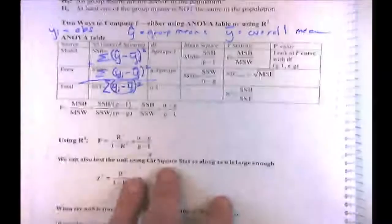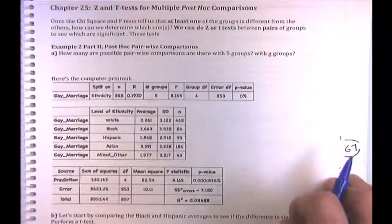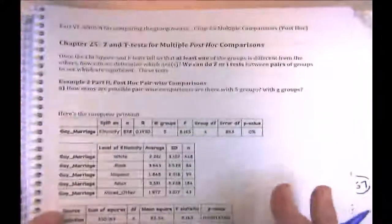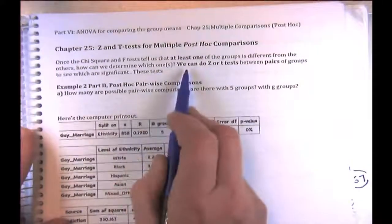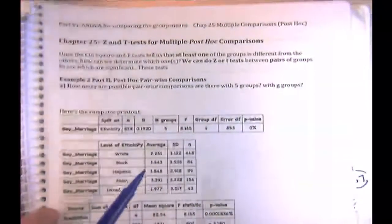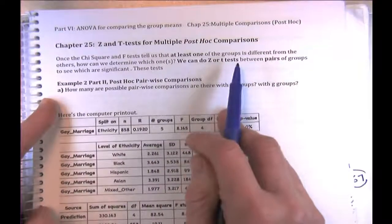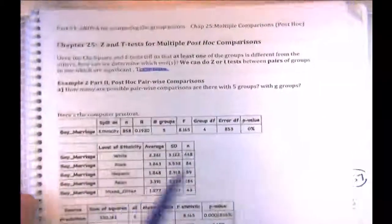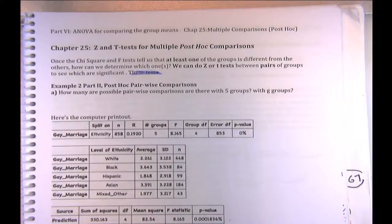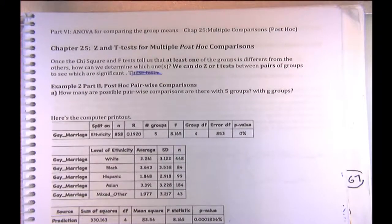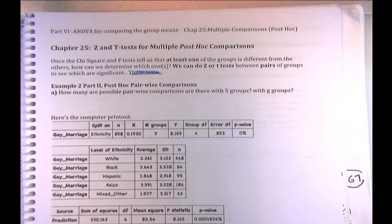That's the summary of ANOVA decomposition. Now let's move on to individual pairwise comparisons. Once the chi-square and F-test tell us at least one group is different, we do Z or T tests on individual pairs — just like we did on individual slopes in regression — to determine which ones are significant.